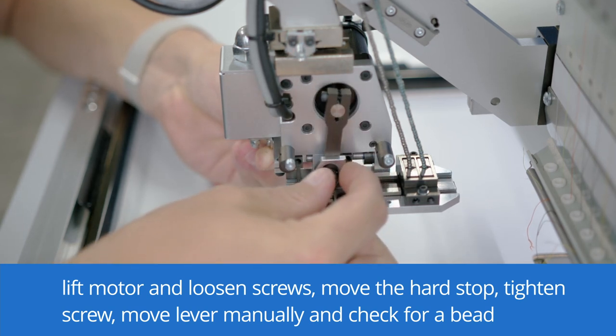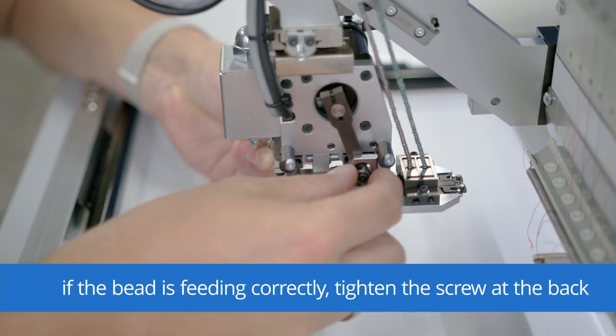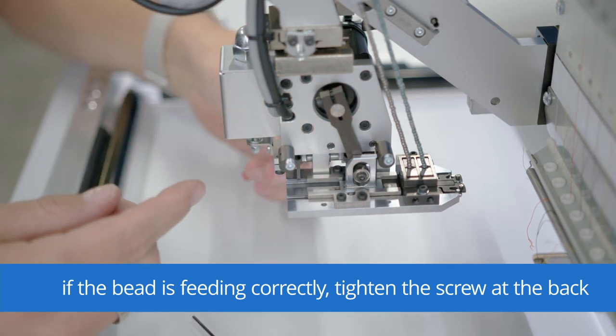Check by moving the lever manually if a bead is feeding correctly. If yes, you can tighten the screw on the opposite side.